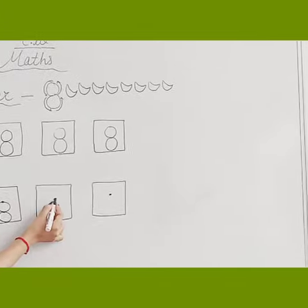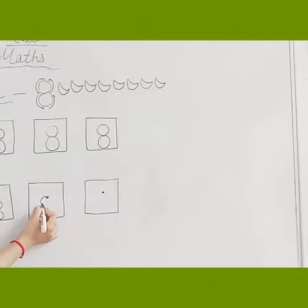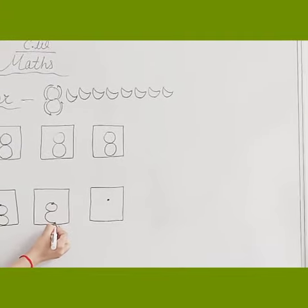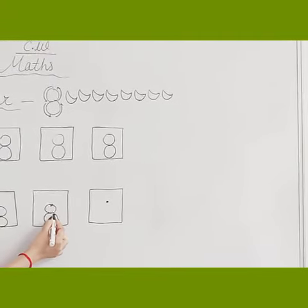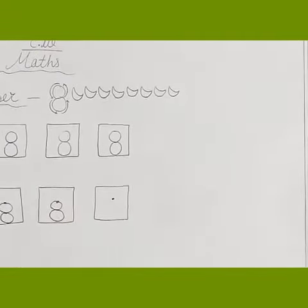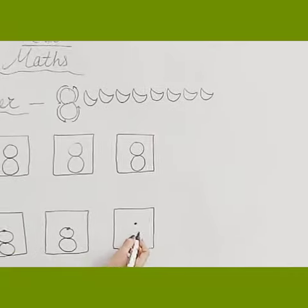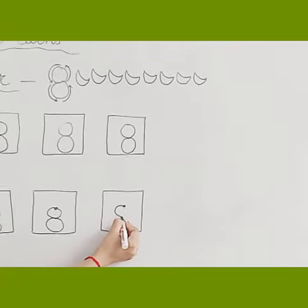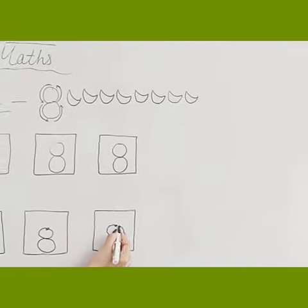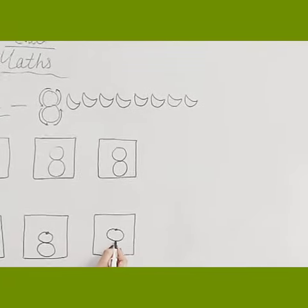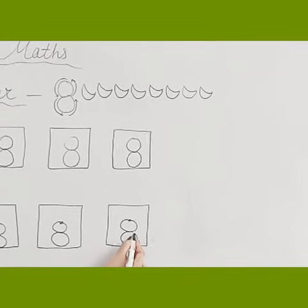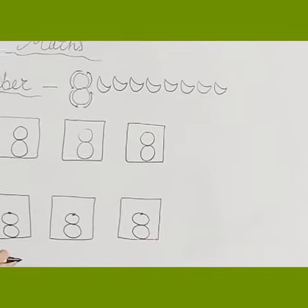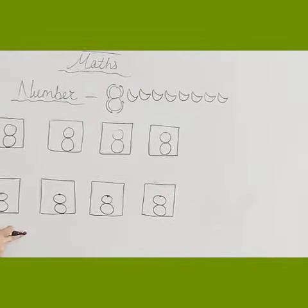Once again, first we will make a curve, then we will make another curve in the same way. Once again, start from the dot and make a curve, then we will make another curve in the same way.